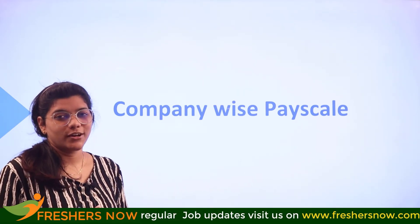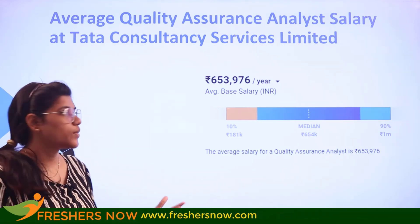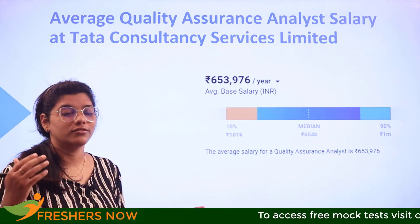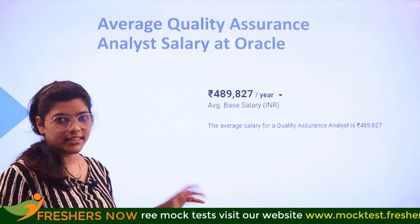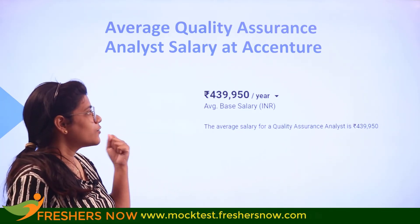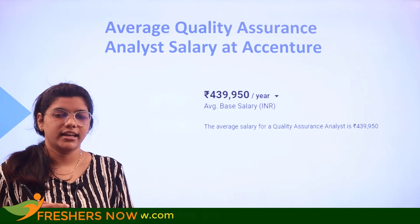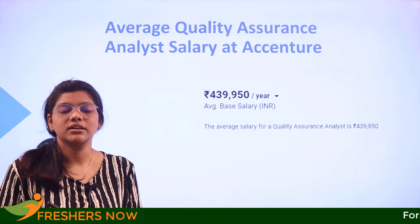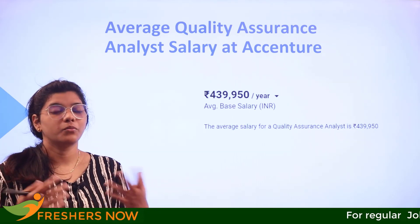Speaking of companies, let's look at how each company pays their quality assurance analysts. Tata Consultancy Services (TCS) is paying 6,53,000 — a really good pay, crossing all the location-wise pay scales. Another company pays around 4,89,000, and Accenture pays 4,39,000 — quite a balanced pay. Whether you are starting at your foundations, on an internship basis, or working in open source, you can always look forward to an elevation just like the professional growth graph we showed.